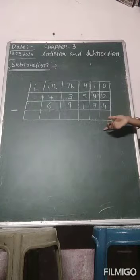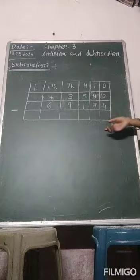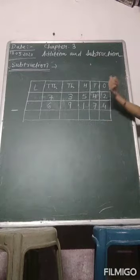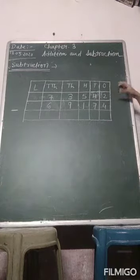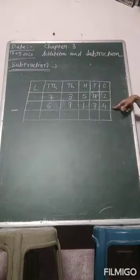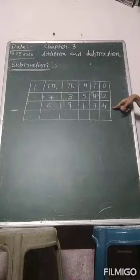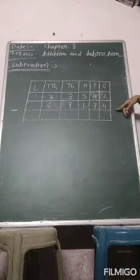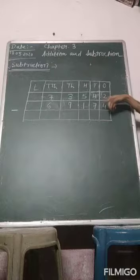Subtraction of numbers with regrouping is done when any of the digits in the greater number is less than the digit in the corresponding place value of the smaller number. Then subtraction of the number can be done by borrowing.